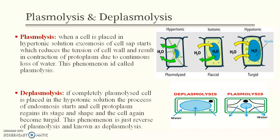This process is called Deplasmolysis. Endosmosis is the cause — the plasmolyzed cell regains its shape and size. Deplasmolysis is the phenomenon by which this occurs.